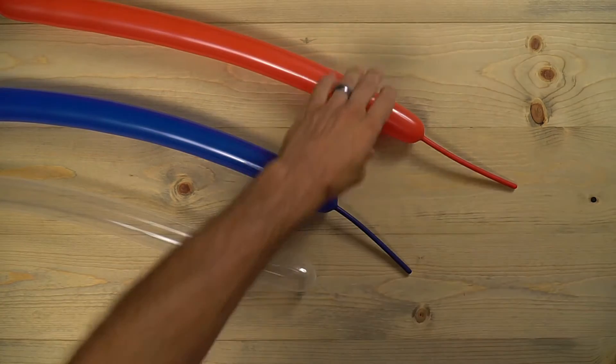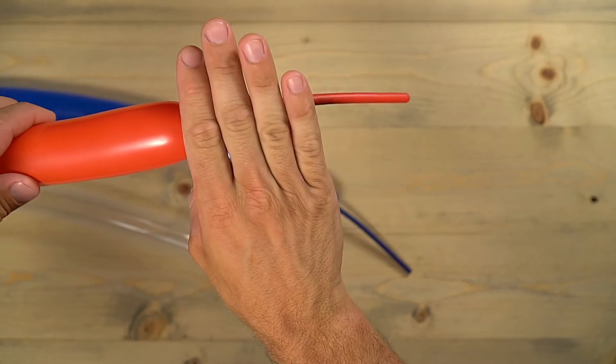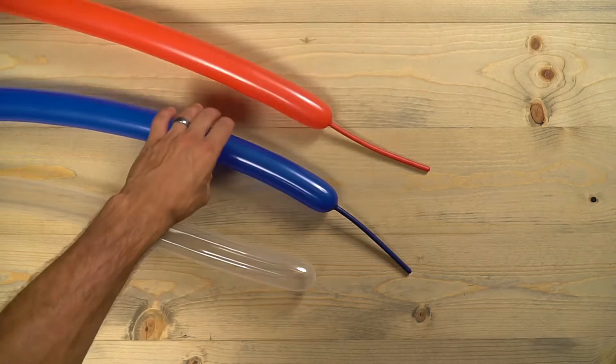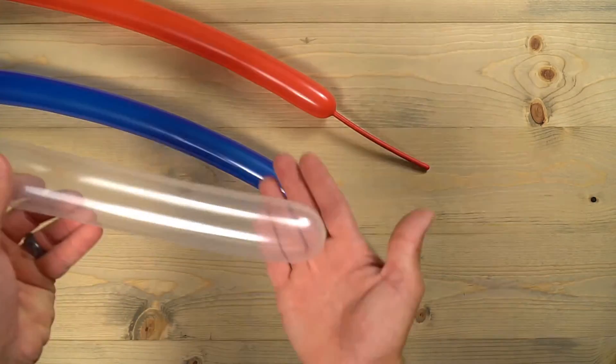Blow the red and dark blue up about the same. There's going to be somewhere around eight fingers lengths left, so right about there. Don't need a ton of air in those. You're going to blow up that diamond clear all the way. That's going to be for the web.